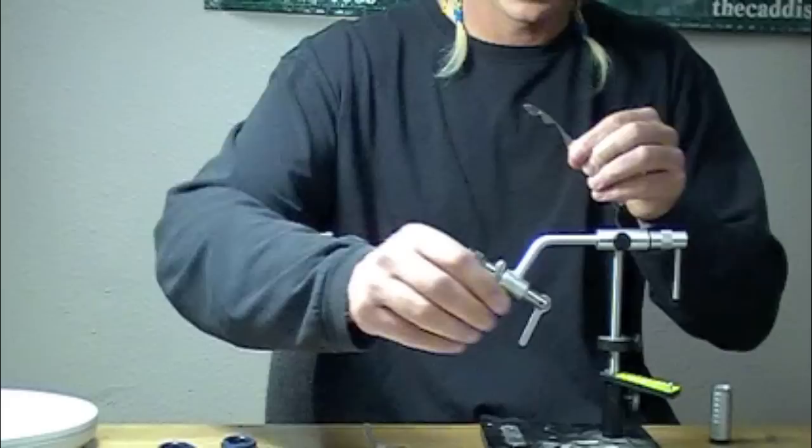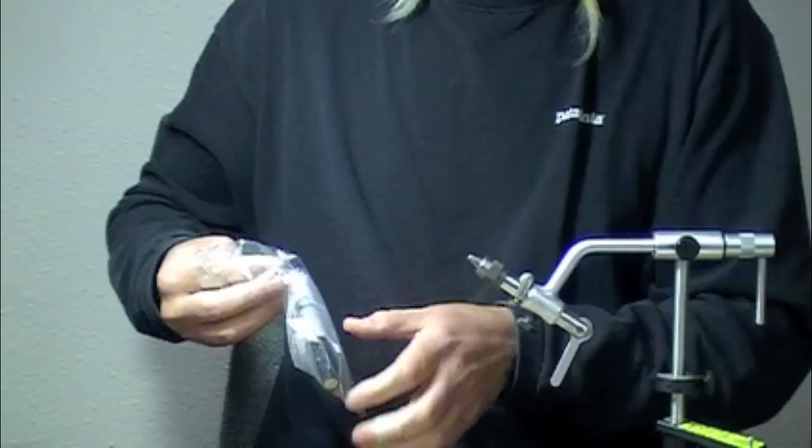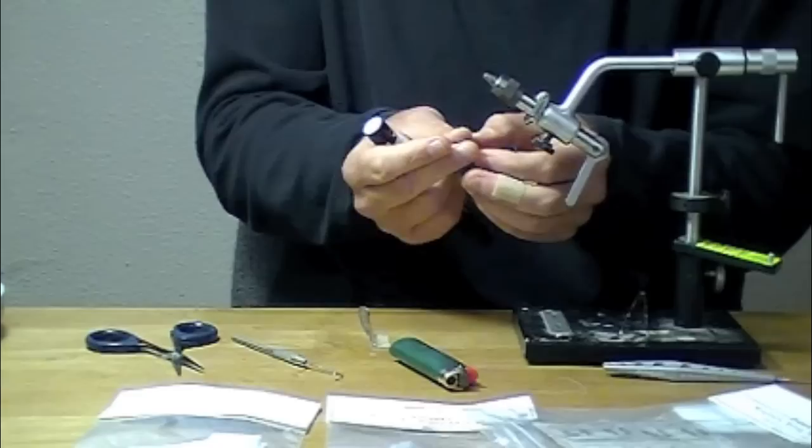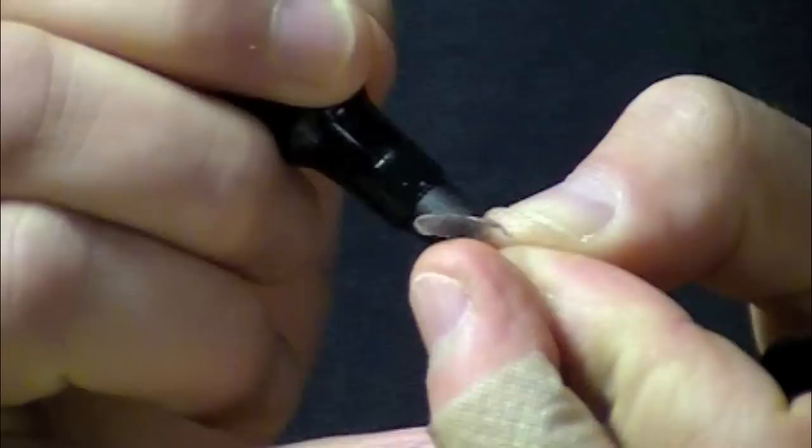The other interesting thing that you can do with these is that this material will take ink. So if you've got Chartpak, Prismacolor, any number of the permanent marking materials, you can basically tint them to your specifications just by brushing it with a marker.